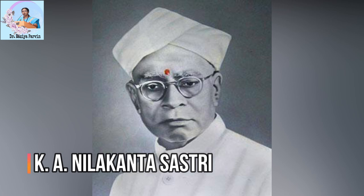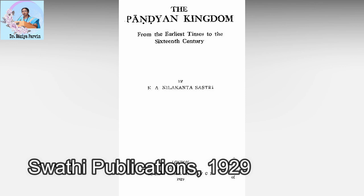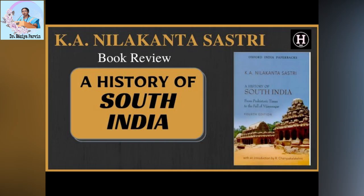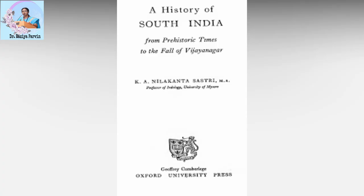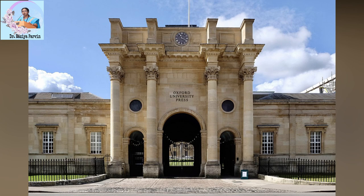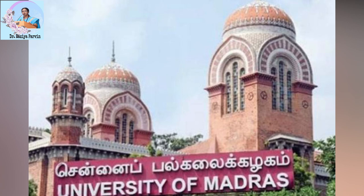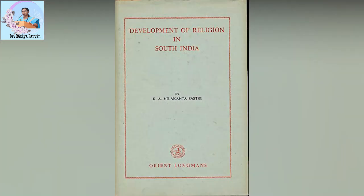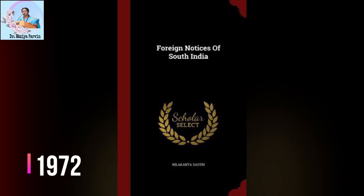The famous historian of South India, K.A. Nilakanta Sastri's book 'The Pandian Kingdom from the Earliest Times to the 16th Century,' published in 1929 by Swathi Publications. Again, K.A. Nilakanta Sastri has written 'A History of South India from Prehistoric Times to the Fall of Vijayanagara,' published in 1955 by Oxford University Press. 'The South Indian Polity' written by T.V. Mahalingam, published in 1955 by the University of Madras. K.A. Nilakanta Sastri also wrote 'The Development of Religion in South India,' published in 1963 by Orient Longman. Another important book by K.A. Nilakanta Sastri is 'Foreign Notices of South India from Megasthenes to Mahuan,' published in 1972.